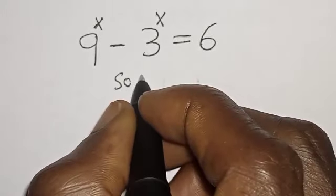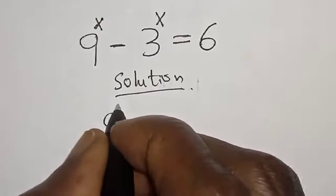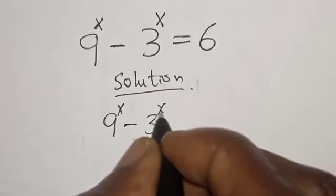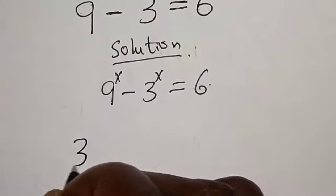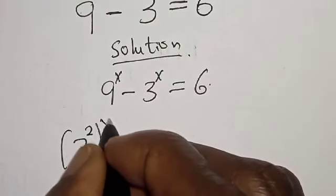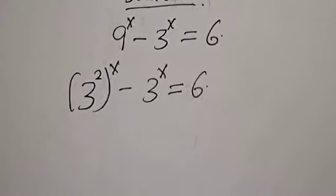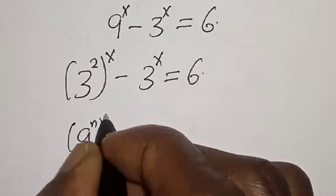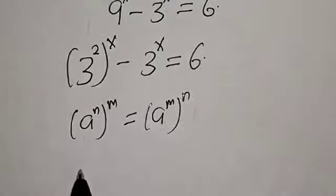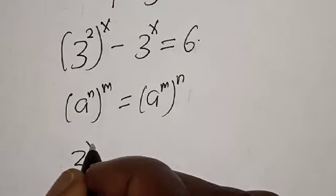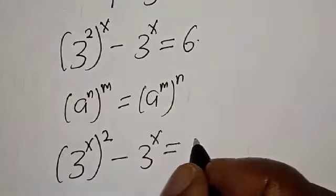Solution. We have the given equation: 9 raised to power x minus 3 raised to power x is equal to 6. Now, 9 raised to power x is the same thing as 3 raised to power 2x, so this becomes 3 raised to power 2x minus 3 raised to power x is equal to 6. Remember that a raised to power n raised to power m is the same thing as a raised to power m raised to power n.